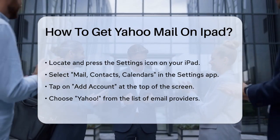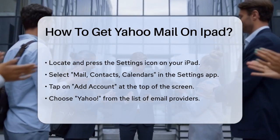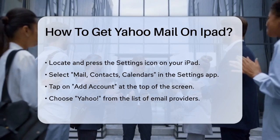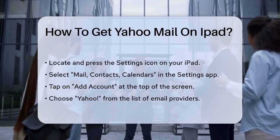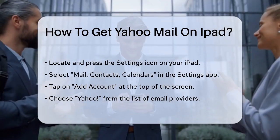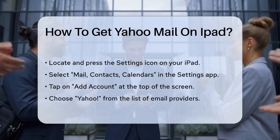Once you're in the Settings app, select Mail, Contacts, Calendars. Then tap on Add Account at the top of the screen. Here, you'll see several email providers. Choose Yahoo.